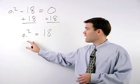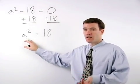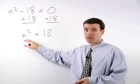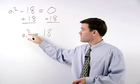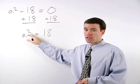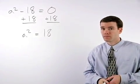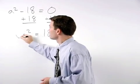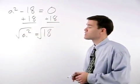Next, we must get the a by itself, and in order to do that, we do the opposite of what is happening to a. Since a is being squared, the opposite of squaring is square rooting. So to get a by itself, we square root both sides of the equation.